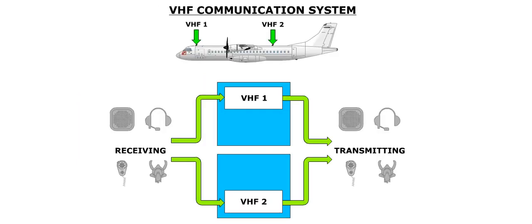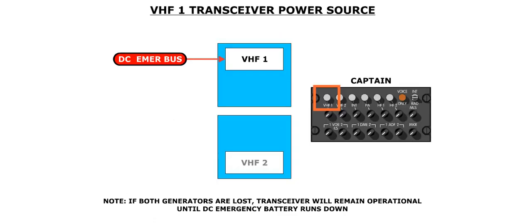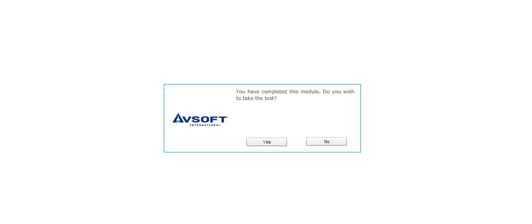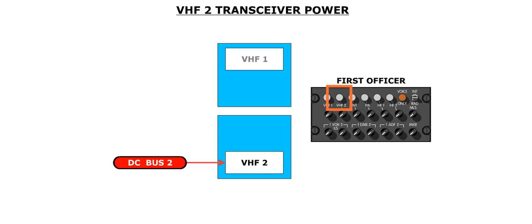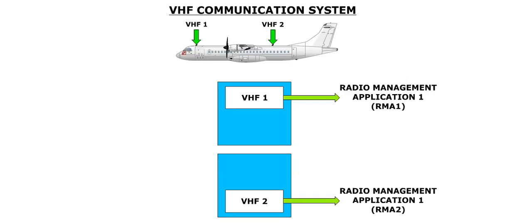The aircraft has two VHF transceivers, VHF-1 and VHF-2, which are used for receiving and transmitting. The captain's transceiver, VHF-1, is powered by the DC emergency bus. Therefore, even in the event both generators are lost, the captain's transceiver will remain operational until the emergency battery runs down. The first officer's transceiver, VHF-2, is powered by DC bus 2. Each transceiver is connected to an associated antenna and the radio management application.